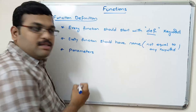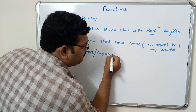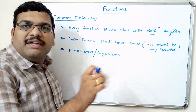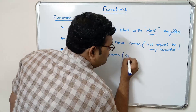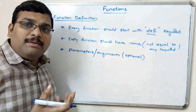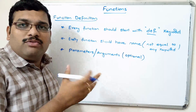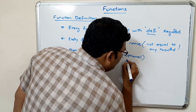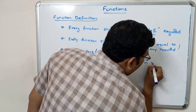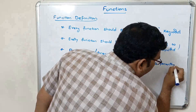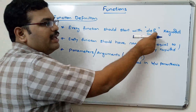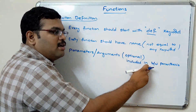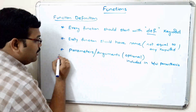Next are parameters, also called arguments. Parameters or arguments are the inputs given to that particular user-defined function. This is optional — every function may or may not have parameters. You can have zero or more parameters or arguments, and they must be included in between parentheses.